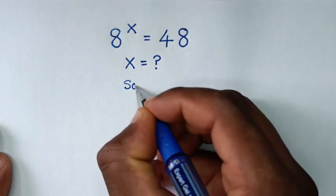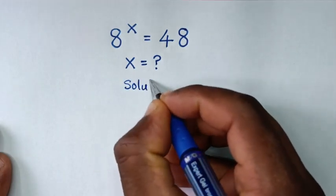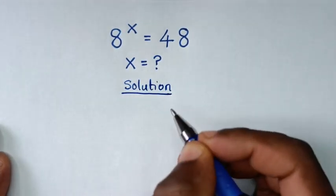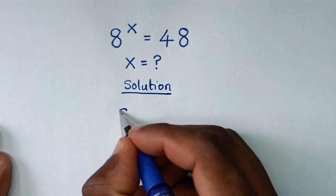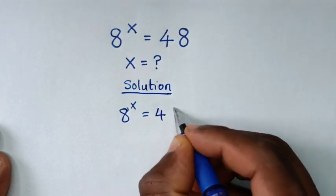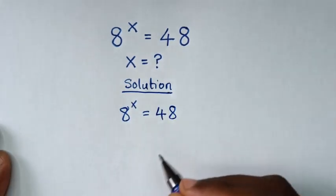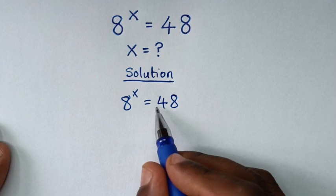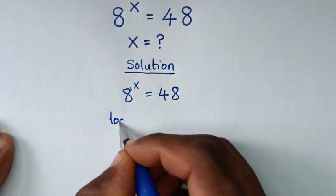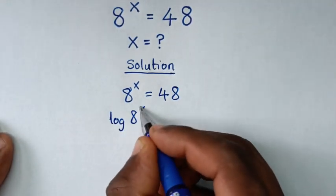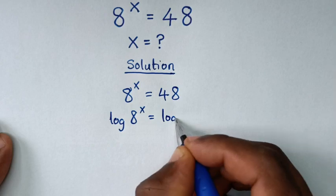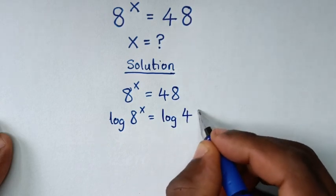Now, solution. From our problem, which is 8 power x is equal to 48, in the first step we'll apply log in both sides, so it will be log of 8 power x is equal to log of 48.